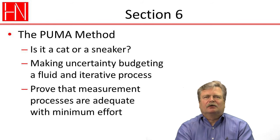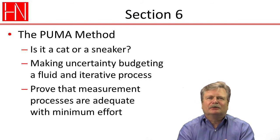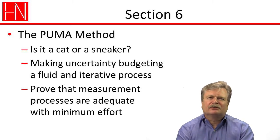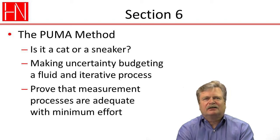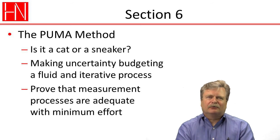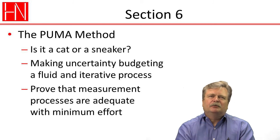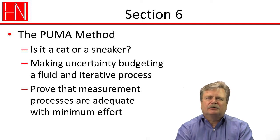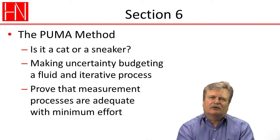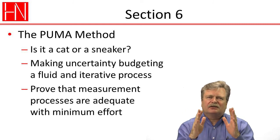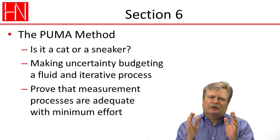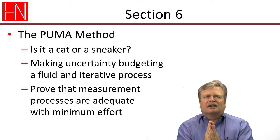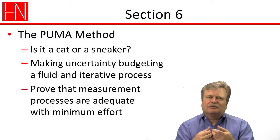Finally, in section six, we're going to talk about what we call the PUMA method — and no, it's not a big cat, and it's not athletic footwear. PUMA stands for the Procedure for Uncertainty Management. It's a way of making uncertainty budgeting a more fluid and iterative process where, instead of trying to find the exact uncertainty, the idea is to prove that the measuring process is adequate for our purpose with minimum effort. For many measuring processes where we're checking parts against a tolerance, as long as the uncertainty is a certain percentage of the tolerance or less, we're happy. We don't really care about the exact uncertainty as long as it's less than that target value, and taking that approach makes uncertainty estimation quite a bit easier.